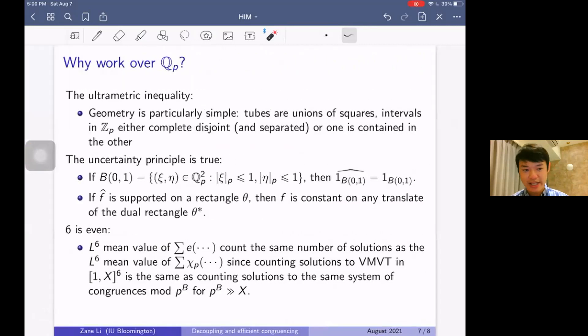Now with Xiumin Guo and Po-Lam Yung, we follow their proof and optimize their argument. But the crucial difference is that instead of working over R, we work over Q_p. And once we combine all these three - you know, by optimization and just working over Q_p - we show that the discrete restriction constant is bounded by basically log squared. Why is working over Q_p advantageous? Well, first of all, we have the ultrametric inequality: basically that the p-adic norm of x + y is bounded by the maximum of the p-adic norm of x and the p-adic norm of y. This allows for the geometry to be very simple.